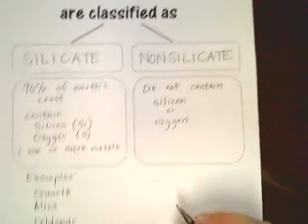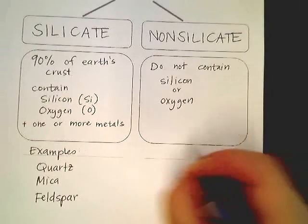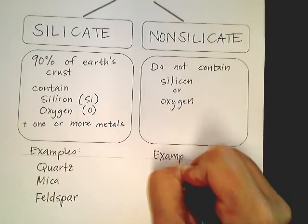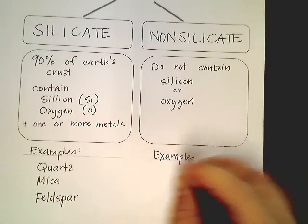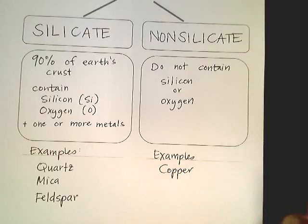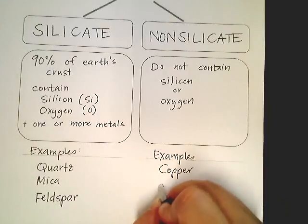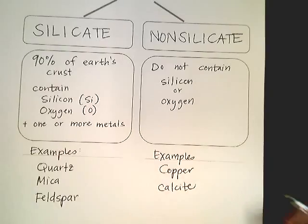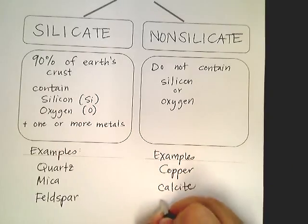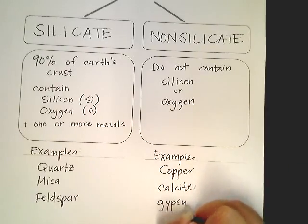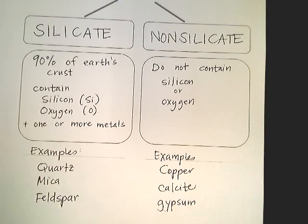You just have a few examples. Copper is one, found in the ground, especially in this region of the planet. Calcite, which looks like quartz, and gypsum, which is in drywall.